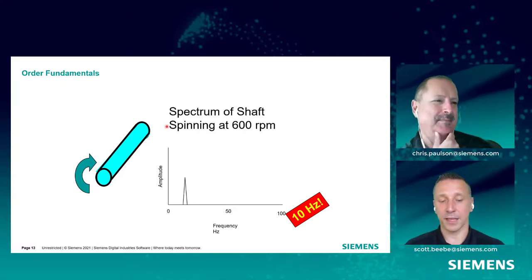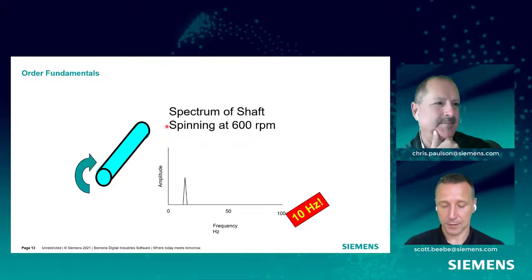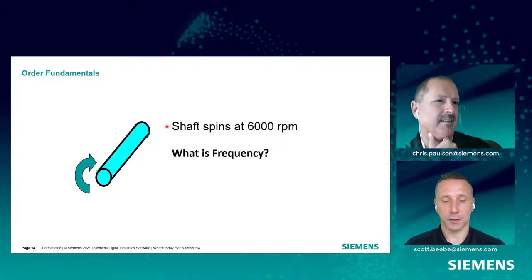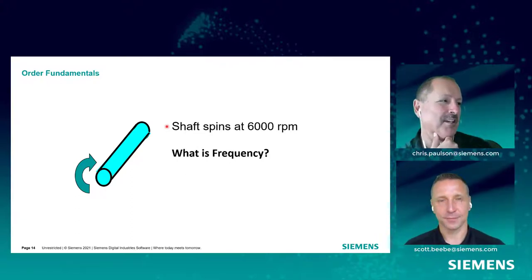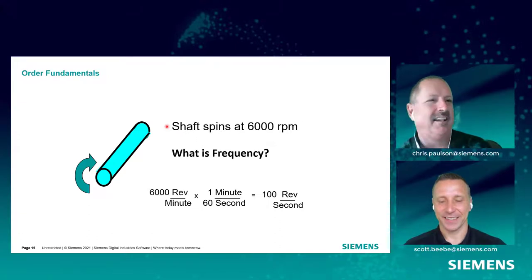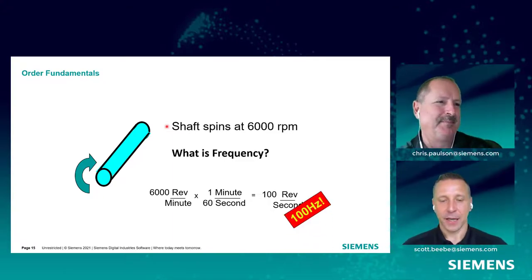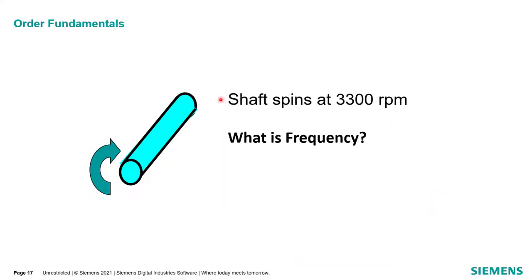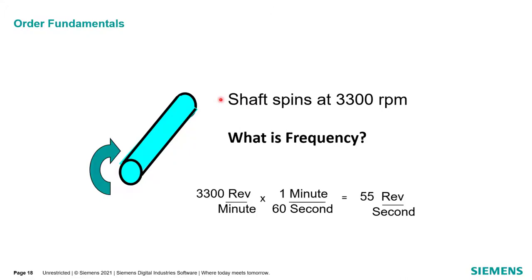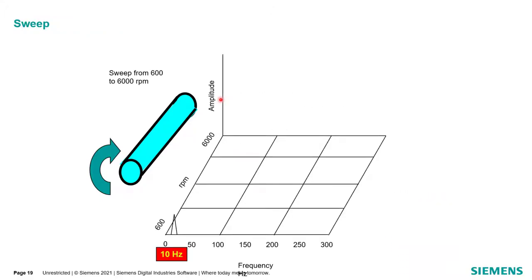If we increase the speed to 6,000 RPM, what would be the frequency? The frequency would be 100 hertz — you'd increase it by 10. Right, so it would be 100 hertz, and we could plot that amplitude there as well. If we make it a little more complicated and spin it at 3,300 RPM, the frequency can again be calculated — let's say 55 hertz. We take that amplitude and plot it too.